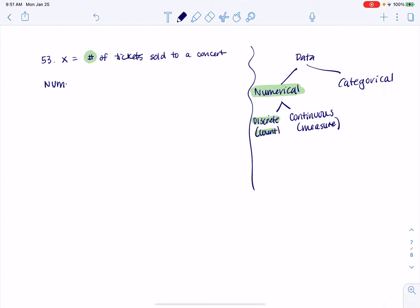If you want to write discrete numerical, that's fine. And then in terms of an example of the type of data or of the data, imagine whatever concert venue you want to pick and think about how many tickets you might sell there.